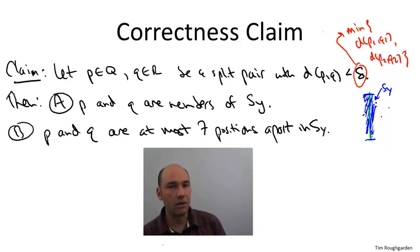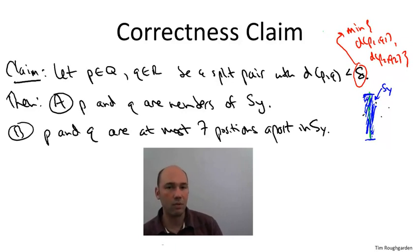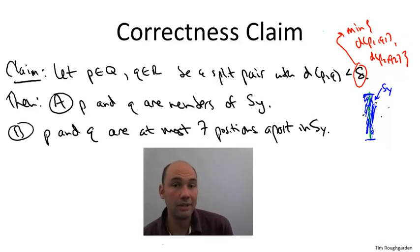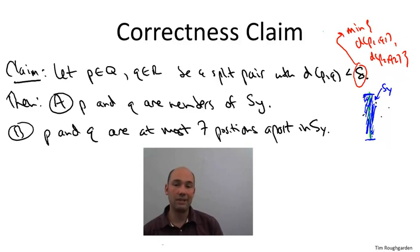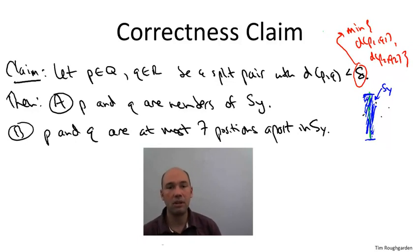Consider any split pair — one point P from the left side Q and another point Q from the right side R. Further suppose it is an interesting split pair, meaning the distance between them is at most delta. Here delta is the parameter passed to the closest split pair subroutine: the smallest distance between a pair of points lying all on the left or all on the right.